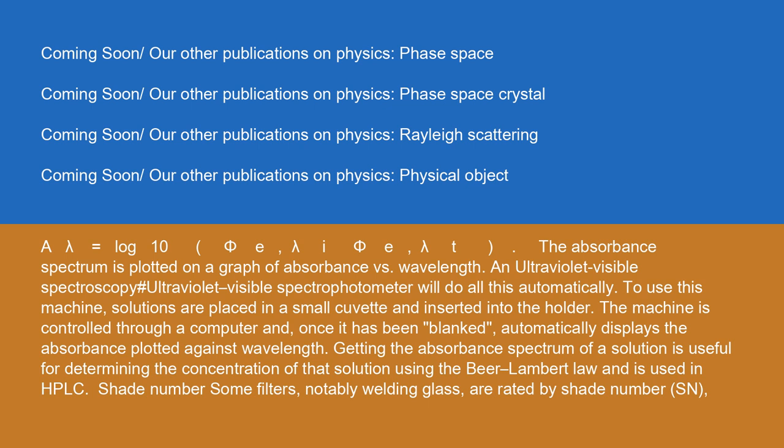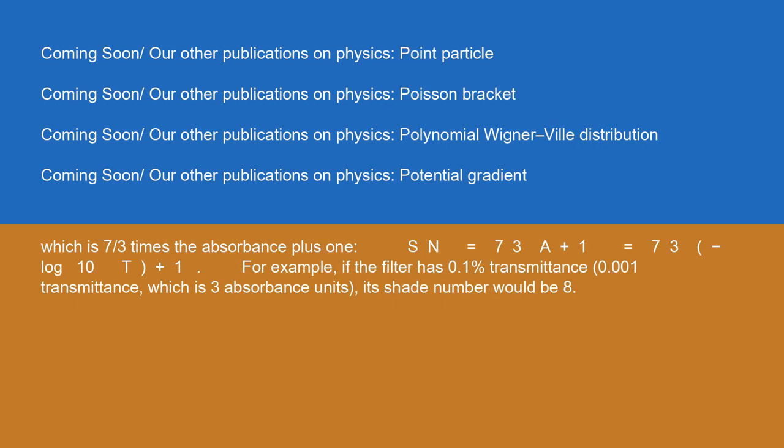Some filters, notably welding glass, are rated by shade number (SN), which is 7/3 times the absorbance plus 1: SN = (7/3) × A + 1 = (7/3) × (−log₁₀T) + 1. For example, if the filter has 0.1% transmittance (0.001 transmittance), which is 3 absorbance units, its shade number would be 8.